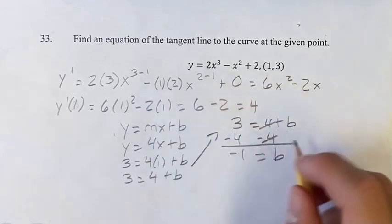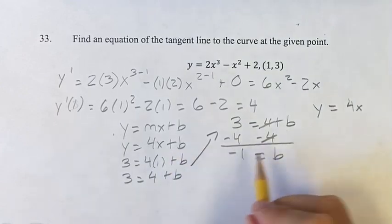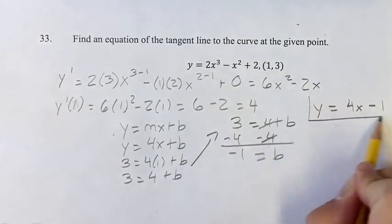So b is negative 1, which means the equation of the tangent line is y is equal to 4x plus negative 1, which is just minus 1. That's going to be your final answer.